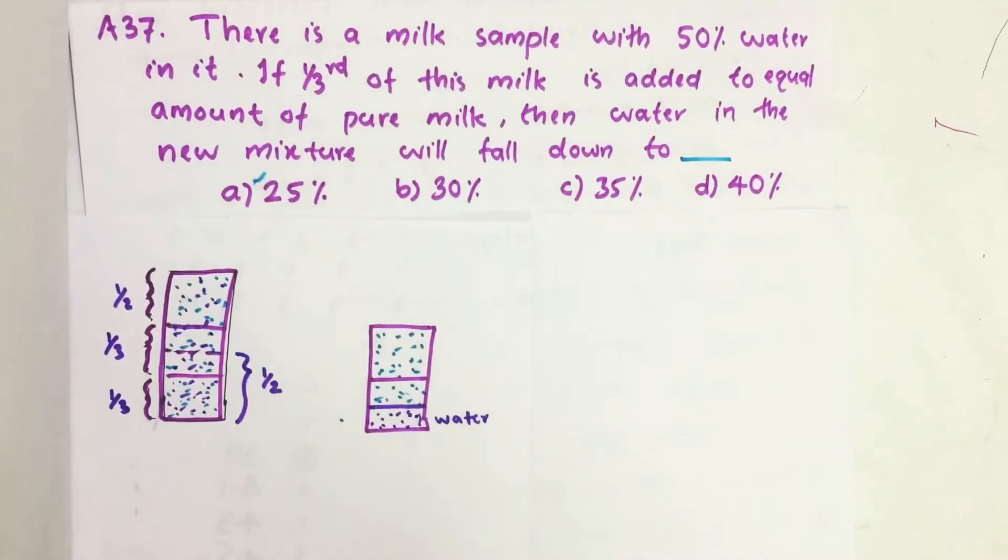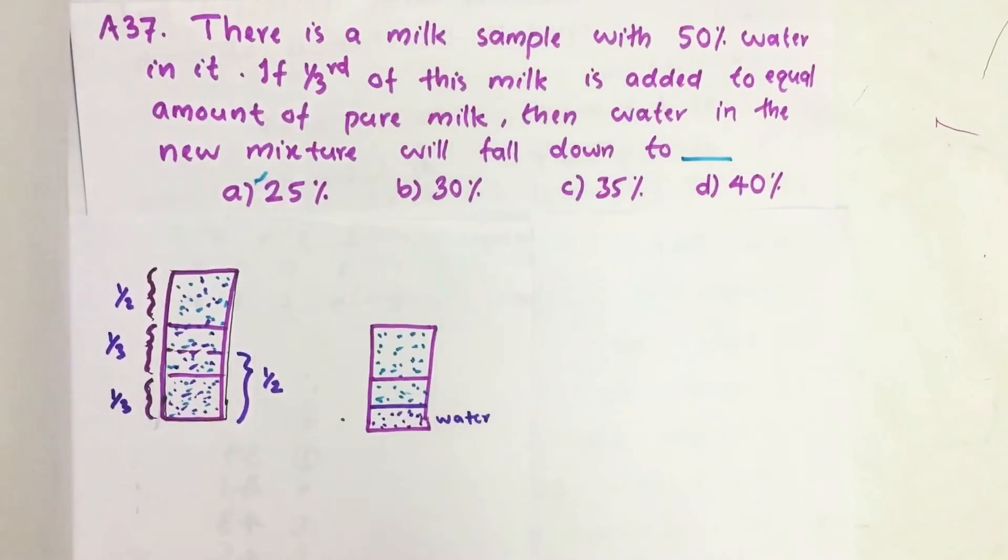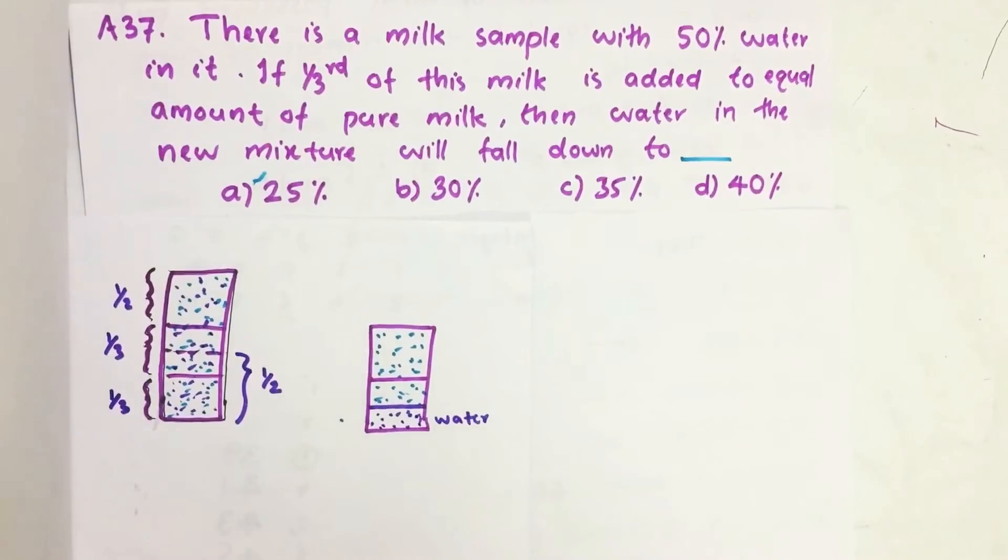If one third of this milk is added to equal amount of pure milk, then water in the new mixture will fall down to—that is what we have to find.